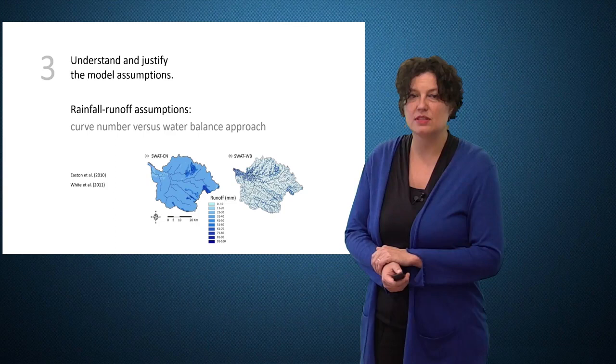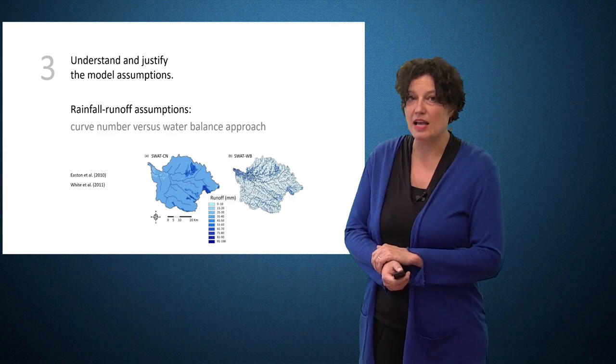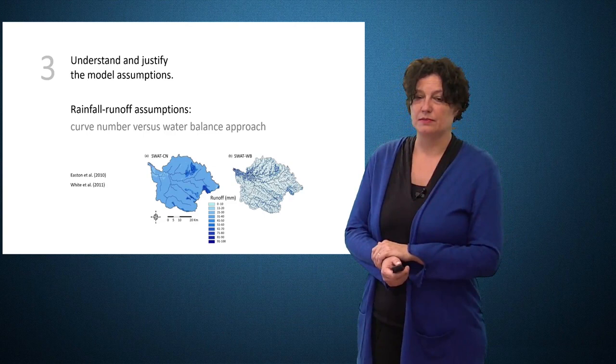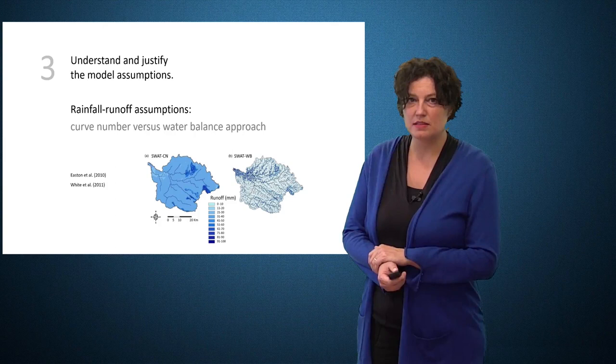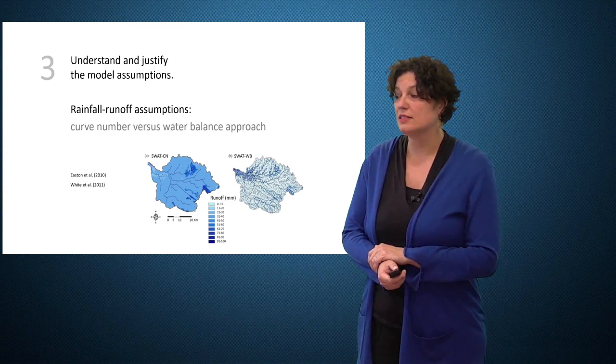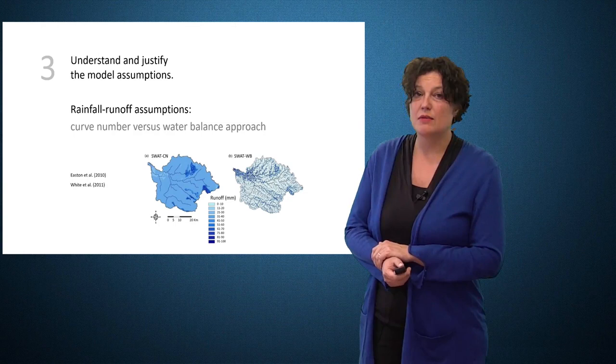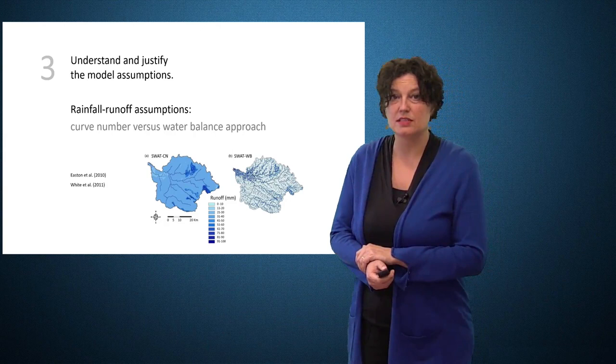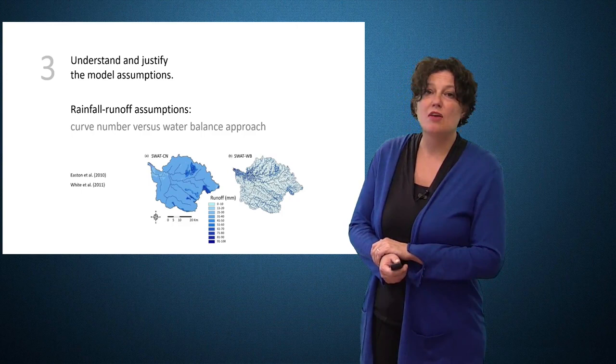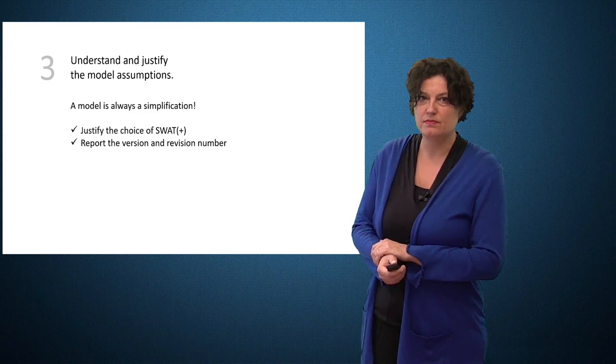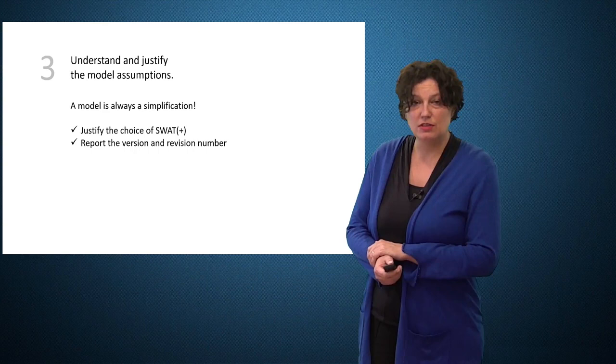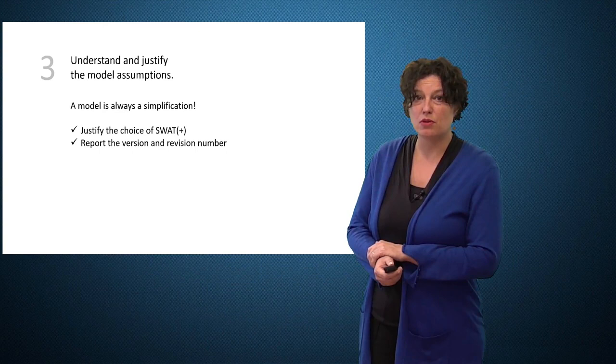The SWAT model uses the curve number, which responds to soil properties, land use and slopes. So, most surface water is typically generated in the headwaters where the slopes are high. But, and this is the case for the left figure. But, at Cornell University they developed a water balance method. In this method, water is generated when the soil is saturated. Infiltration is then hampered, resulting in surface runoff. Since the soils are typically shallow near the river, there is less storage available. As a result, most surface water will be generated in the valleys. Both approaches are happening in reality, and often the truth might be in the middle. Both processes might occur. In general terms, it is important that you justify the choice of the SWAT Plus model. In a modeling report, it is important to mention the version of SWAT and the release number.